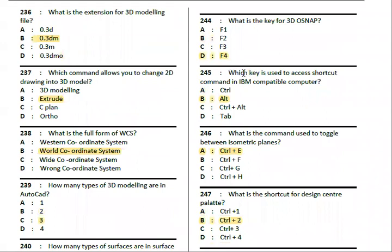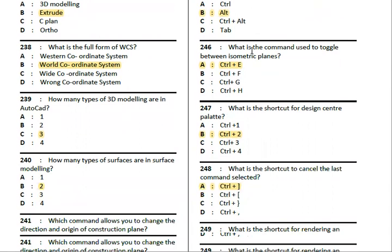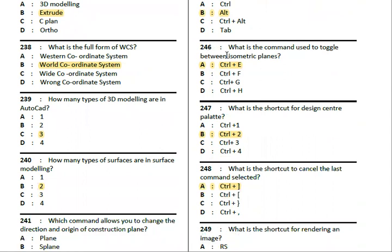Which key is used to access the shortcut command in a compatible computer? Press the Alt key. Next, which command should be used to toggle between isometric planes? The answer is Ctrl+E.